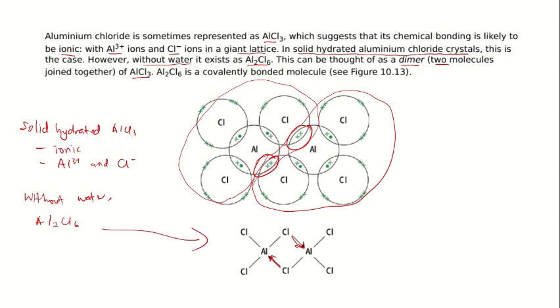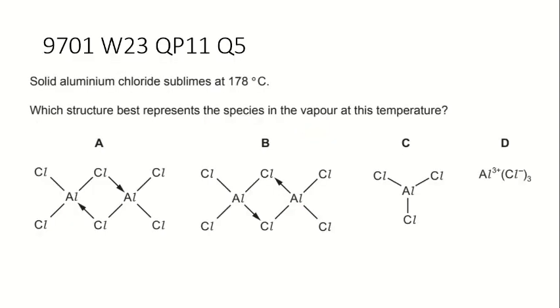Right now, we can go back to the question and look at the answers and choose the best answer. So solid aluminium chloride sublimes at 178 degrees Celsius. Sublimation - no water. Not in a hydrated solid giant lattice. No water here.